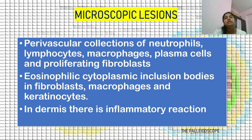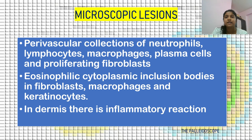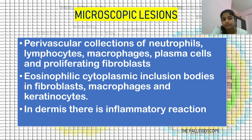Microscopic lesions include perivascular collections of neutrophils, lymphocytes, macrophages, plasma cells and proliferating fibroblasts. Eosinophilic intracytoplasmic inclusion bodies occur in fibroblasts, macrophages and keratinocytes. In the dermis, there is an inflammatory reaction.